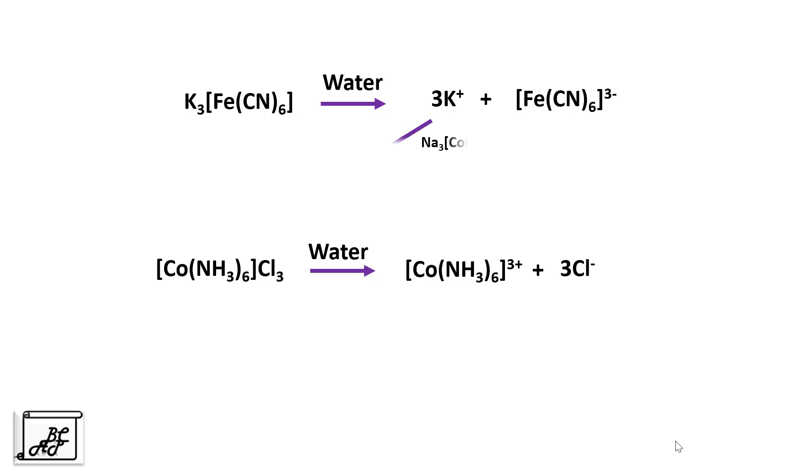Now in the first case, if we carry out a test with the help of sodium cobalt nitrate, it will give a brown colour precipitate. That means the potassium ion which is outside the square bracket, the test is positive. But if we carry out a test for iron with the help of dilute HCl and KCNS, it will give no result. That means the ion is completely associated with the six cyanide ligands. And in semi-micro qualitative analysis, the test comes out to be negative. That means ion is not giving its individual identity.